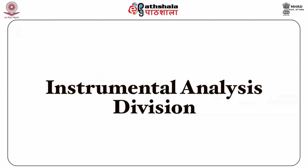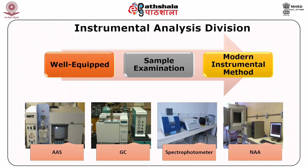Next is the instrumental analysis division. Well-equipped centralized facilities should be available at every lab to examine samples from various divisions using modern instrumental methods. In the present day, the lab should have at least the following latest sophisticated instruments: HPTLC, GCMS, LCMS, SEM, HPLC, FTIR, atomic absorption spectrophotometer, and others like neutron activation analysis.